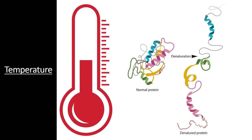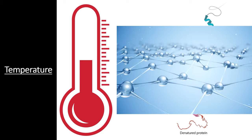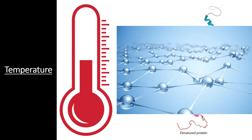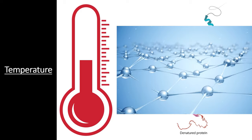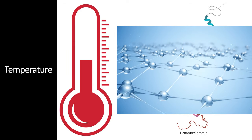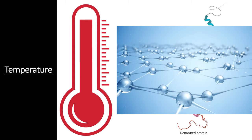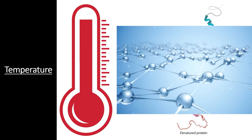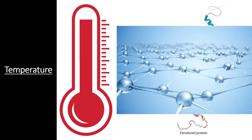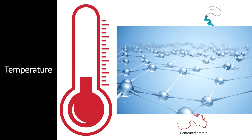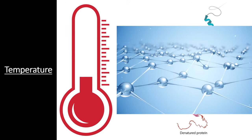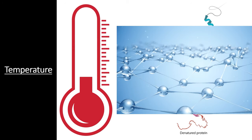To understand why temperature has such a drastic effect on enzymes and other proteins, we have to understand how temperature affects individual molecules. Molecules are held together by bonds, and bonds are simply electrons that are shared between two atoms. Temperature is simply a way that we measure how fast the atoms in a substance are moving. If we raise the temperature, the molecules start moving faster and the individual atoms are less likely to stick together. If we lower the temperature, the atoms in a molecule slow down, come closer together, and the bonds are more rigid.